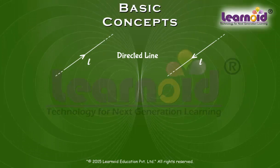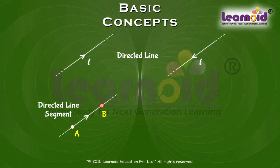Now if we restrict the length of the line L to the line segment AB, then we obtain a directed line segment which has a magnitude equal to its length and a direction.